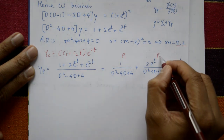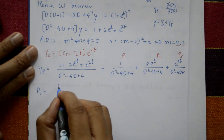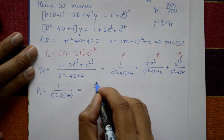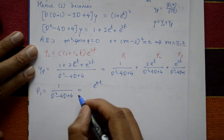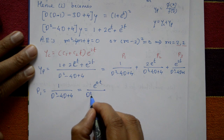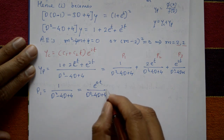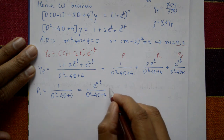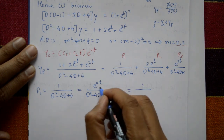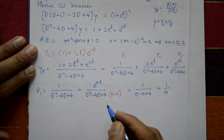P1 equals 1 upon (D² − 4D + 4). Here 1 means e^(0·t). For this type, put D equal to a where a equals 0. Substituting D=0 into the denominator: 0 minus 0 plus 4 equals 4. So P1 equals 1/4.